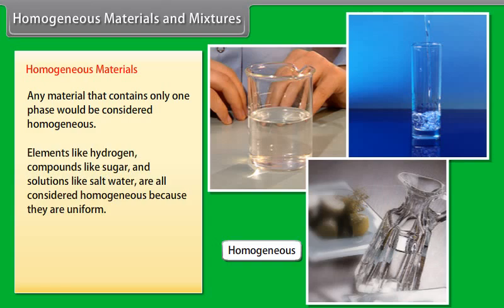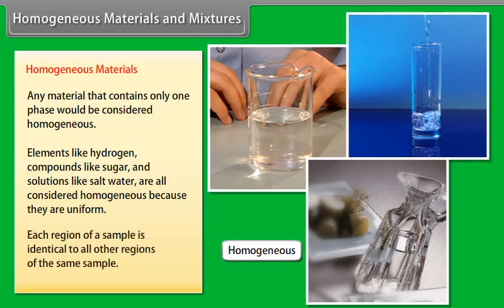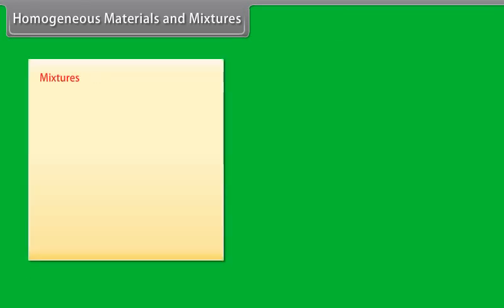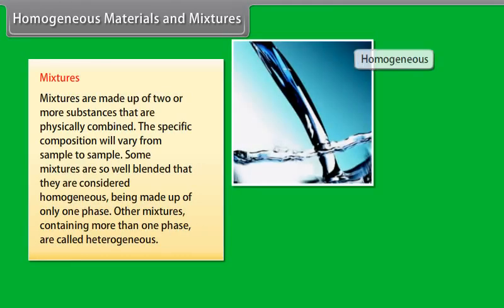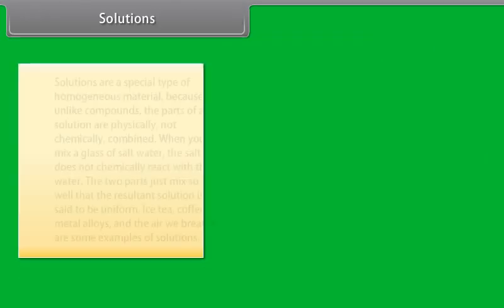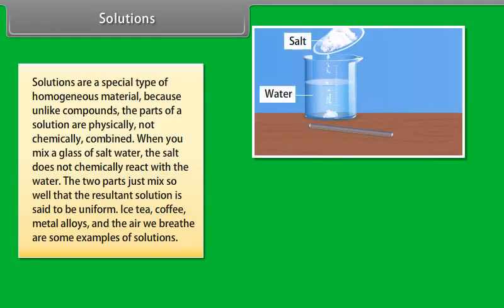A phase is any region of a material that has its own set of properties. In a chocolate chip cookie, the dough and the chips have different properties; therefore, they represent separate phases. Pure gold, which is an element, would only contain one phase. Italian dressing would clearly represent several phases, while a solution of salt water may only contain one phase.